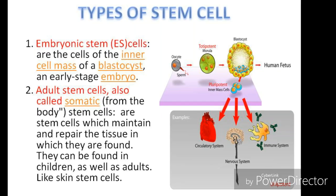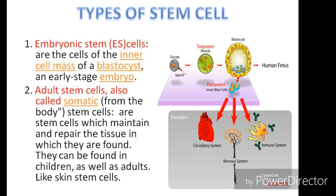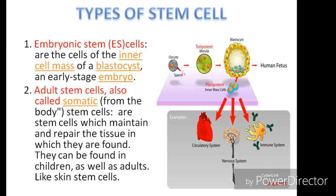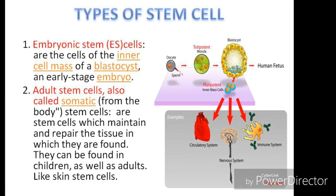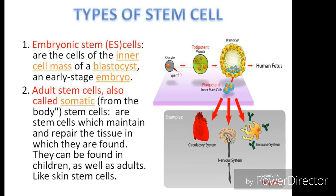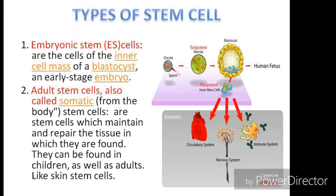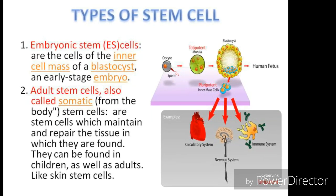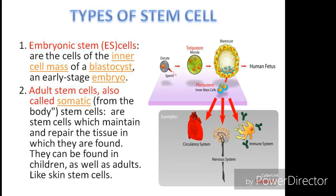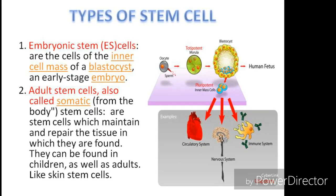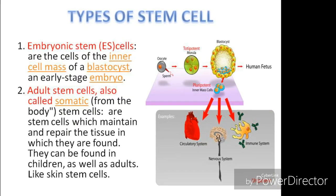Adult stem cells are stem cells that maintain and repair the tissue in which they are found. They can be found in children as well as adults. For example, skin stem cells — when skin is injured, these stem cells come into function and repair the skin. Adult stem cells are unipotent, meaning they can form only similar kinds of cells; skin stem cells produce skin cells only.